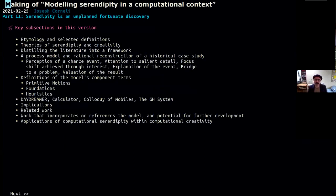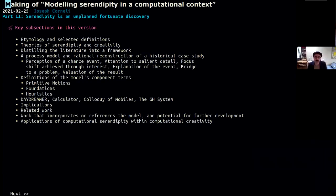That's a high level outline. And just in a little bit more detail, I won't read all of this, but these are surfacing some of the things that we talked about. Again, the process model was important. It has several steps inside. We defined the model's component terms in terms of primitive notions, foundations, and heuristics. They have listed the systems that we looked at alongside the HR-HRL ones I mentioned already.